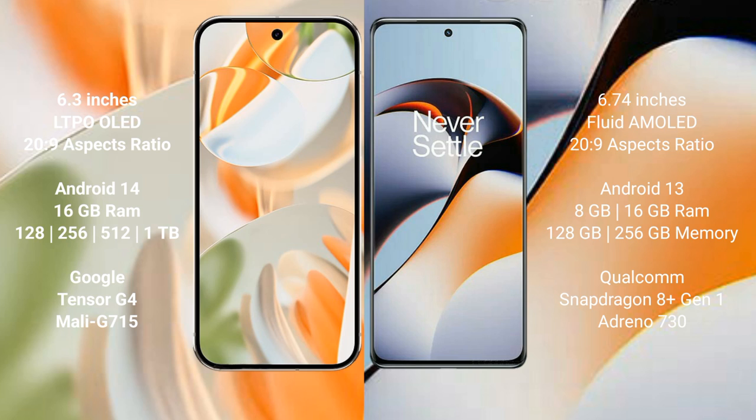The Google Pixel 9 Pro runs on the Android 14 operating system, while the OnePlus 11R runs on the Android 13 operating system.